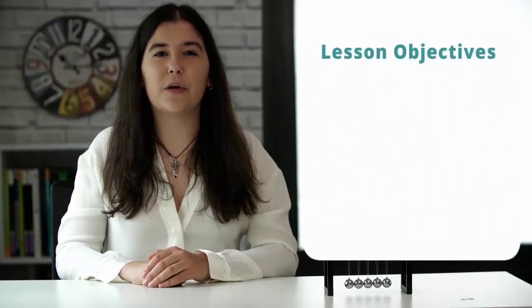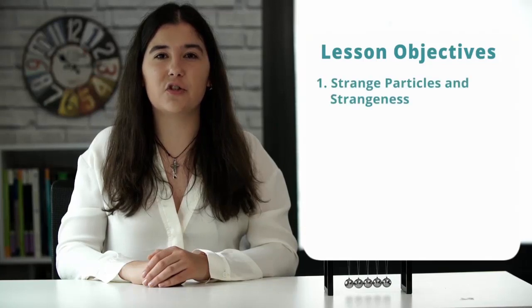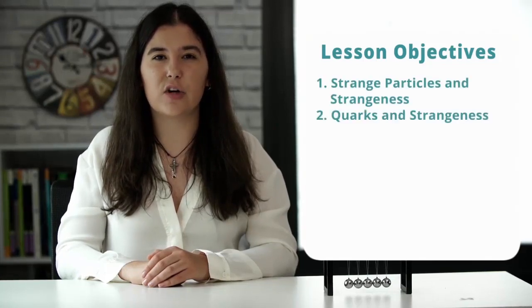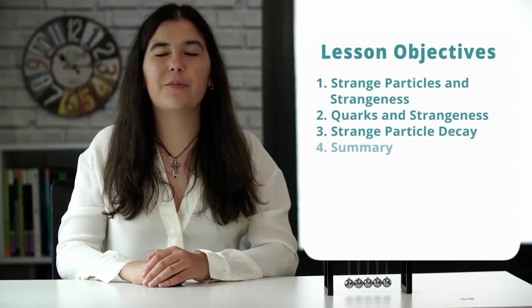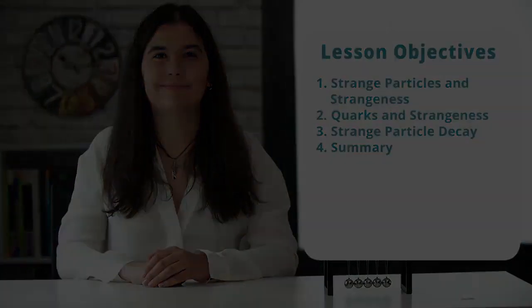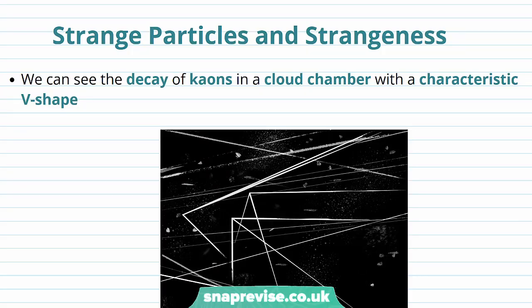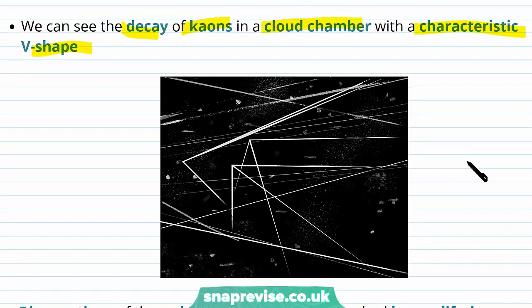In this video we're going to be looking at strange particles, strangeness, quarks, strangeness, strange particle decay, and we'll finish with a summary. We've briefly encountered strange particles and the idea of strangeness before, but now we're going to look at them in a lot more detail. We can see the decay of kaons in a cloud chamber with a characteristic V-shape, which is the characteristic shape of kaon decay.